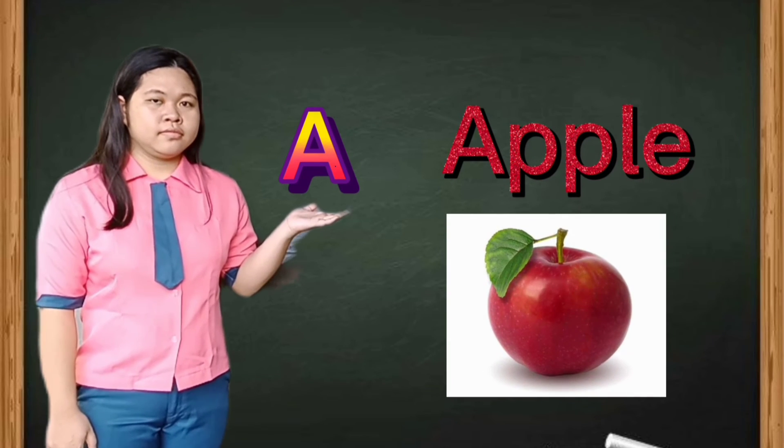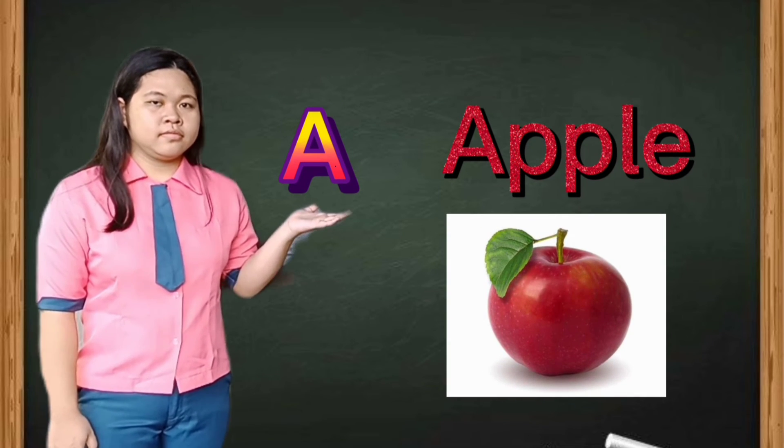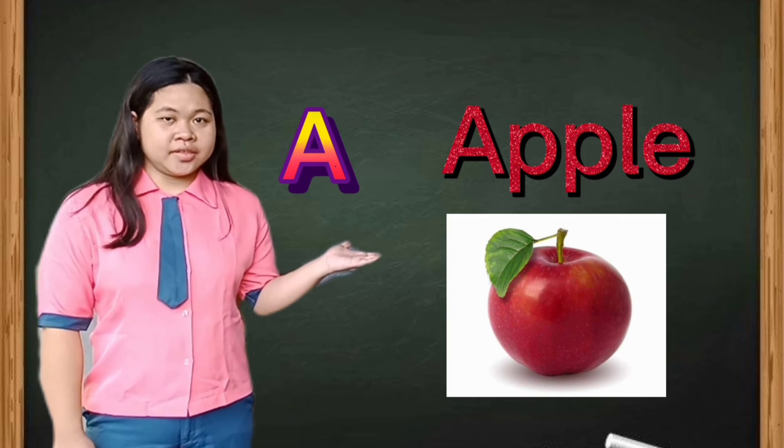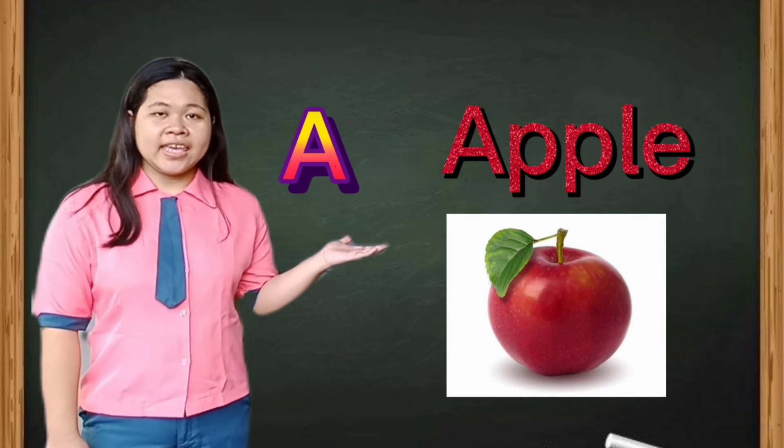The teacher will write the letters and their corresponding words on the blackboard or show them through a projector. The words could also go along with pictures to help students make visual connections. For example: A — Apple.